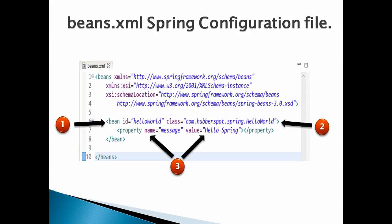Number 3: the HelloWorld bean has an instance variable 'message'. When we want Spring to instantiate the HelloWorld bean, we have to provide values for its instance variables. The 'bean' tag has a 'property' tag with 'name' and 'value' attributes. The 'name' attribute takes the name of the instance variable — in our case 'message'. The 'value' attribute takes the value for the property — in our case 'Hello Spring'. When Spring is requested for the HelloWorld bean, it instantiates it and performs setter injection with the 'message' property set to 'Hello Spring'.